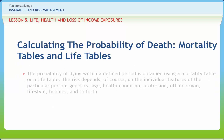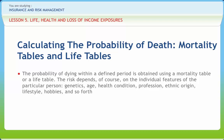The probability of dying within a defined period is obtained using a mortality table or a life table. The risk depends, of course, on the individual features of the particular person — genetics, age, health condition, profession, ethnic origin, lifestyle, hobbies, and so forth. They can tell us the probability that a person celebrating the X birthday will die before reaching the next birthday at age X plus 1. By common actuarial notation, this probability is denoted by QX.